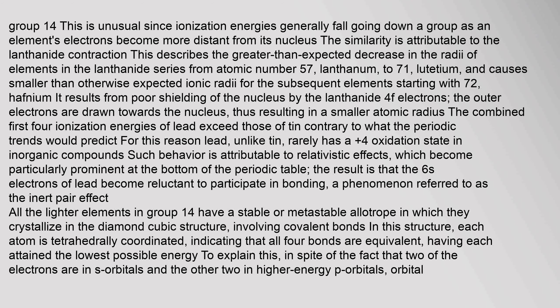A lead atom has 82 electrons, arranged in an electronic configuration of [Xe] 4f14 5d10 6s2 6p2. The combined first and second ionization energy of lead — the total energy required to remove the two 6p electrons from a neutral lead atom — is close to that of tin, its upper neighbour in Group 14. This is unusual since ionization energies generally fall going down a group. The similarity is attributable to the lanthanide contraction, which describes the greater than expected decrease in the radii of elements in the lanthanide series from atomic number 57 (lanthanum) to 71 (lutetium), causing smaller than expected ionic radii for subsequent elements starting with 72 (hafnium). It results from poor shielding of the nucleus by the lanthanide 4f electrons.